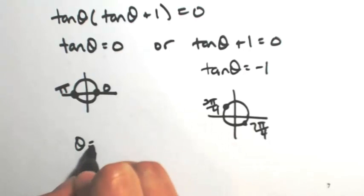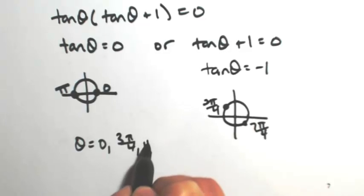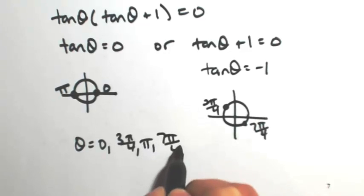So again we have four answers. I'm going to put them in order. So we have 0, 3π over 4, π, and 7π over 4.